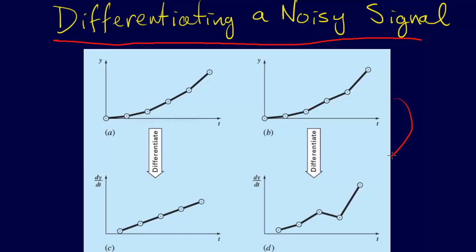When we differentiate that numerically, look at what we get. This is crazy. This is just, it introduces a lot of error. And what we say is that it amplifies the noise in a signal when we differentiate it.